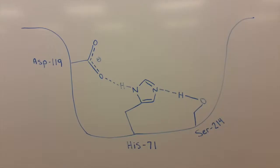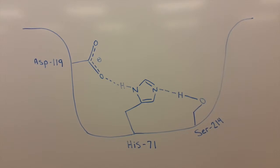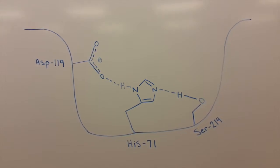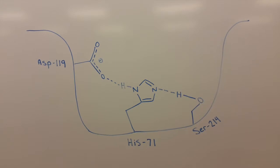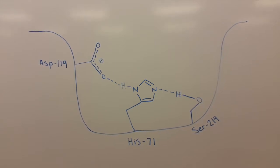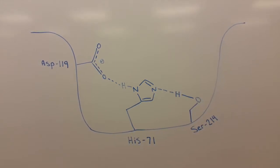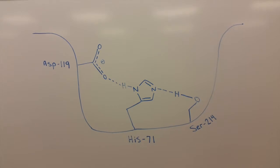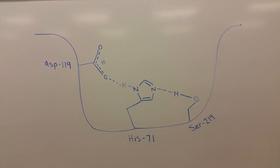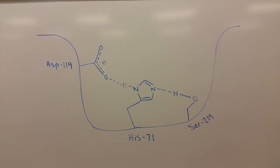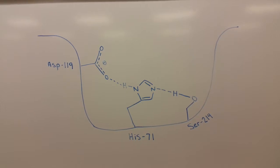Elastase is a serine protease and belongs to the chymotrypsin-like elastase family. As a result, the mechanism for elastase with elastin is virtually identical to the mechanism for chymotrypsin. There are three residues that line the active site: histidine-71, aspartic acid-119, and serine-214.